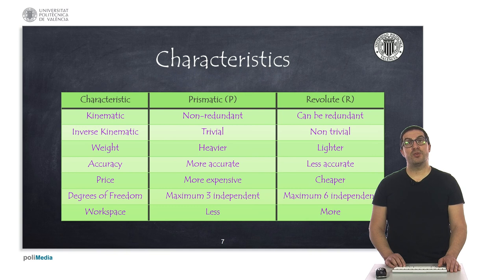Prismatic joints are used basically in Cartesian robots, and the main advantage is that their inverse kinematics is very simple, but only allows to control a maximum of three degrees of freedom, corresponding to the position. Prismatic joints are usually denoted with the letter P, while revolute joints are usually denoted with the letter R.